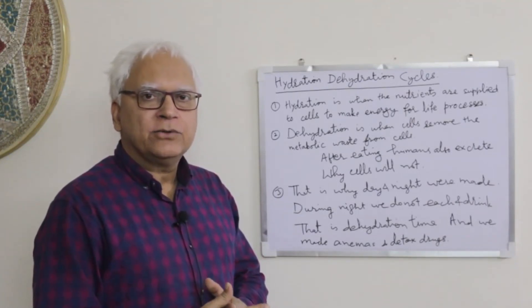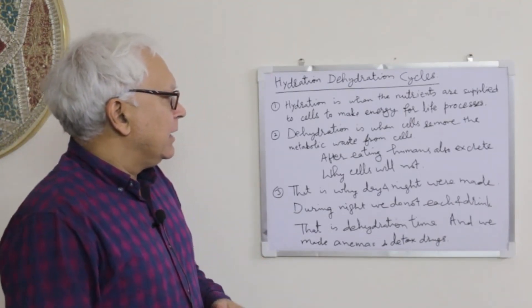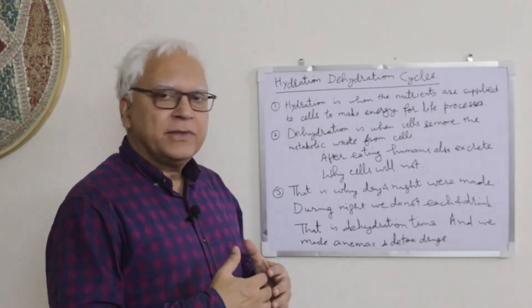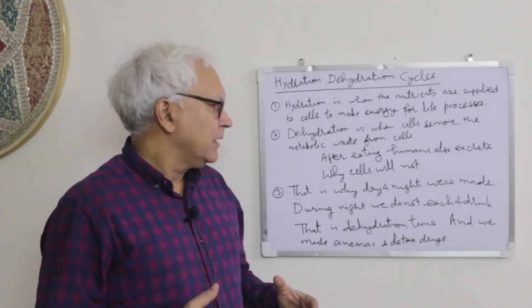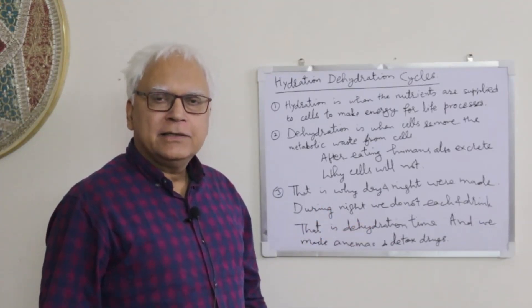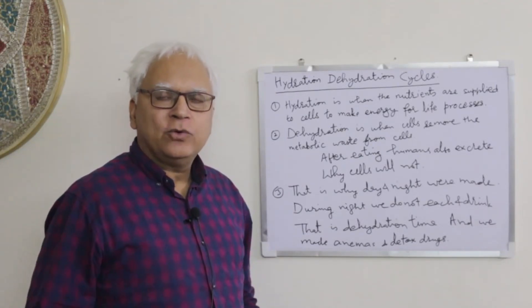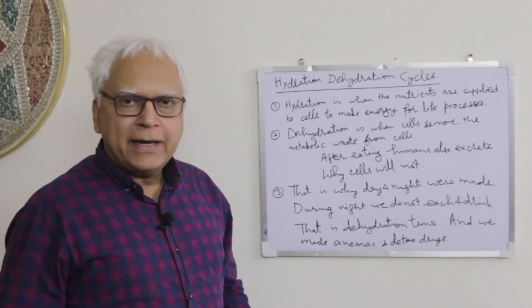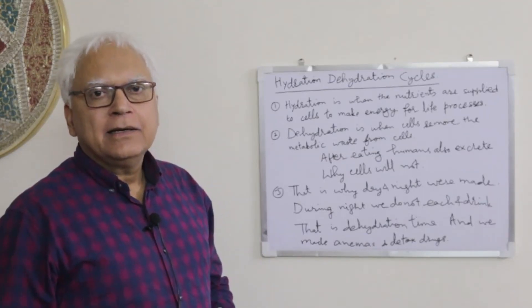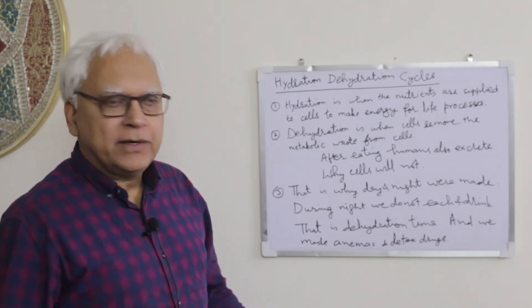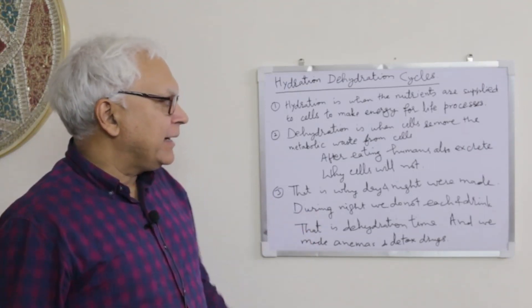Dehydration is when cells remove the metabolic waste from the cells. After eating, humans also excrete, so why not cells? Cells also excrete - they have to throw up the metabolic waste and that is when we dehydrate. Excretion of the cells take place, the metabolic waste removal takes place.